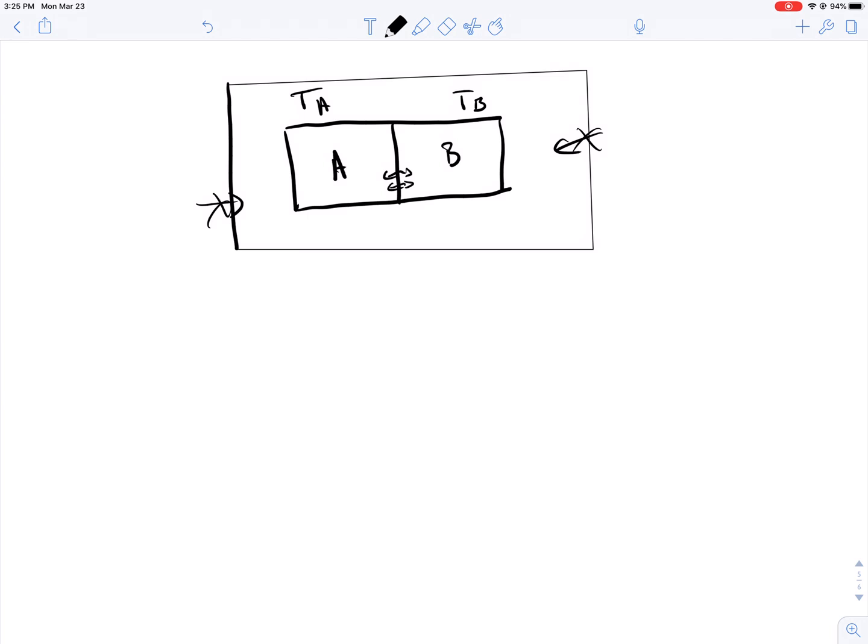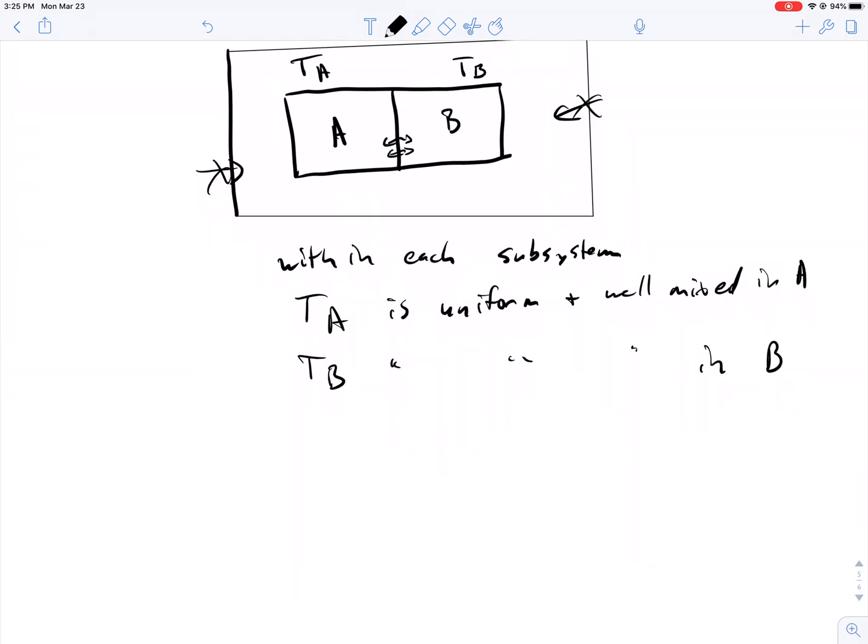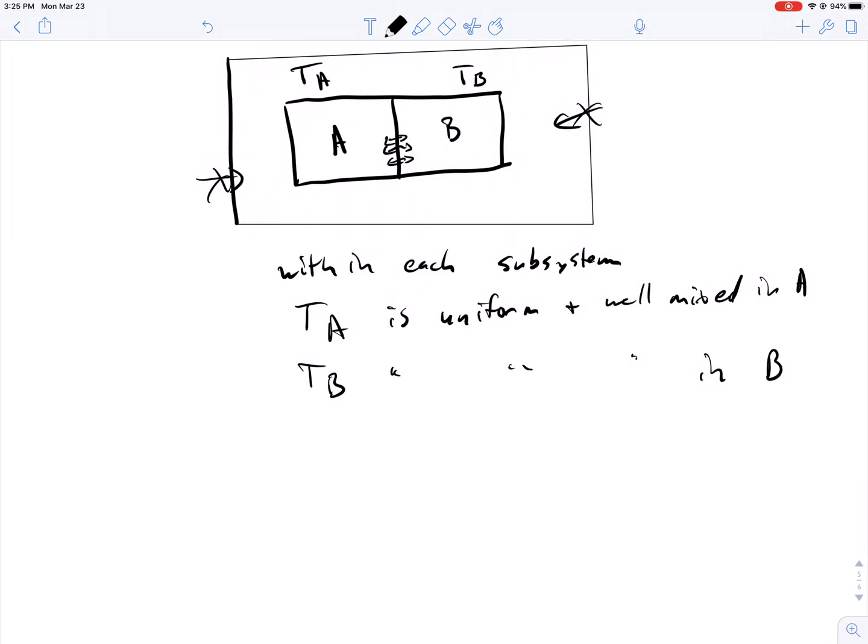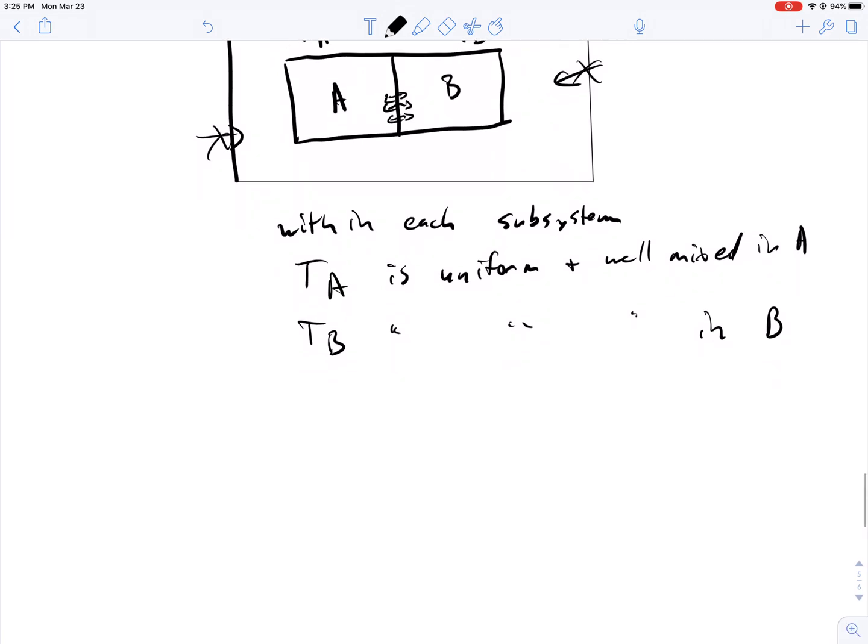Another important thing is that within each subsystem, the temperature in A is uniform and well-mixed. Temperature in B is also the same. So any type of transfer that occurs across this boundary will be instantly equilibrated so that there are no gradients.